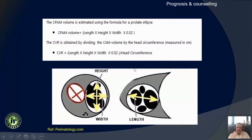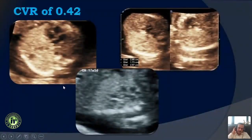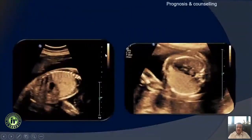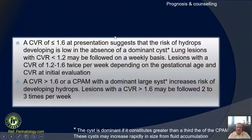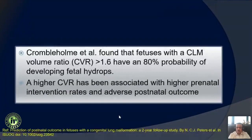Some measurements we use in practice for prognostication: we calculate the CPAM volume and take a ratio with the head circumference to derive what is known as a CVR. These calculators are easily available online. If the CVR is low, that is a good sign. If it is more than 1.6, we need to keep a closer watch. A CVR greater than 1.6 with large cysts in the malformation requires very close follow-up, as these may potentially develop hydrops or require intervention.